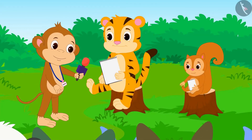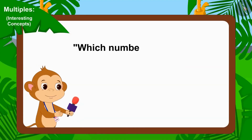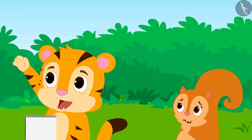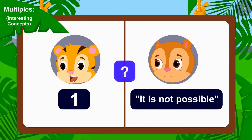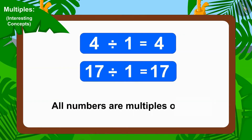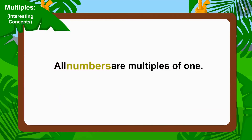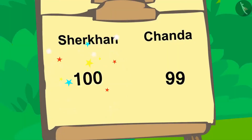Now, the last question of the competition: Which number has all other numbers as its multiples? Sheer Khan immediately replied 'One!' and Chanda replied it is not possible, there is no such number. We can divide any number by 1. Therefore, all numbers are multiples of 1. Sheer Khan's answer is absolutely correct: all numbers are multiples of 1. With this, Sheer Khan won the competition, going one point ahead of Chanda.